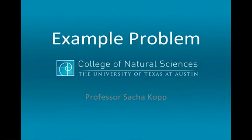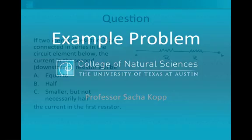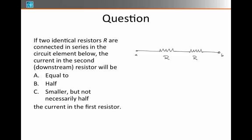Here's a short example problem showing how to use Kirchhoff's laws. Suppose we have two identical resistors connected in series in the circuit element below. What will be the current in the second resistor, the one that's downstream, compared to the first? Will it be equal, half, or smaller but not necessarily half in comparison to the current in the first resistor?